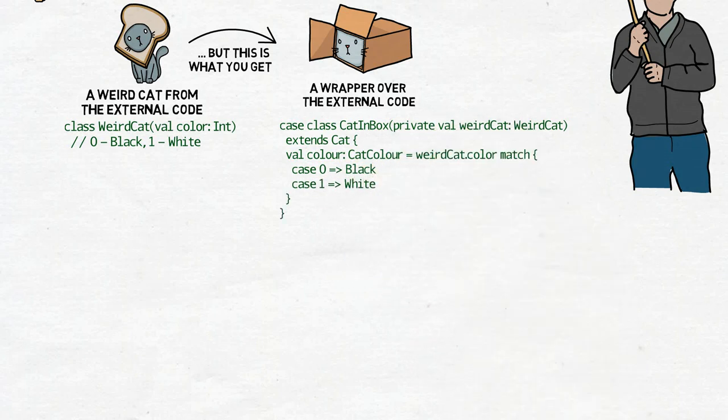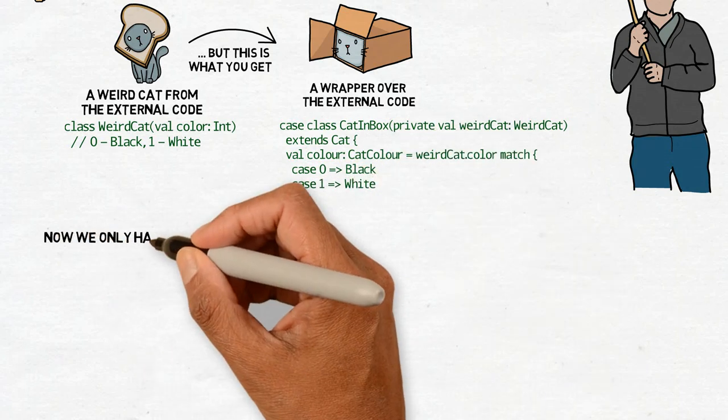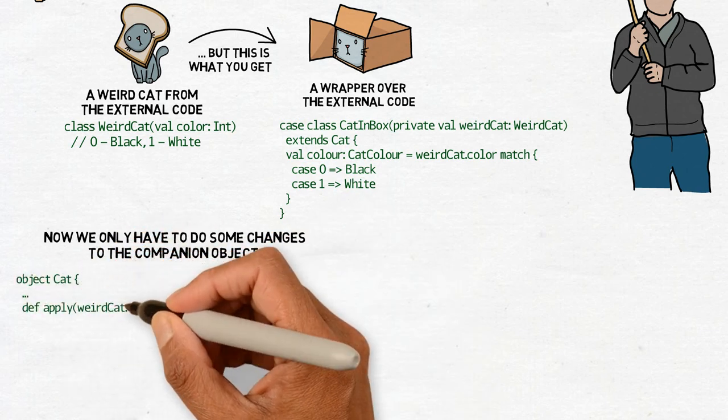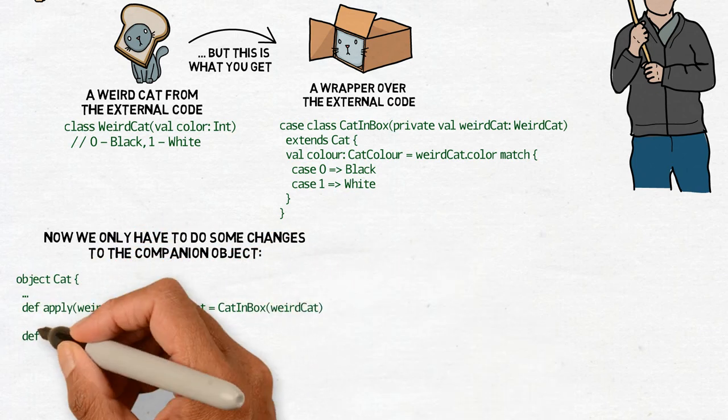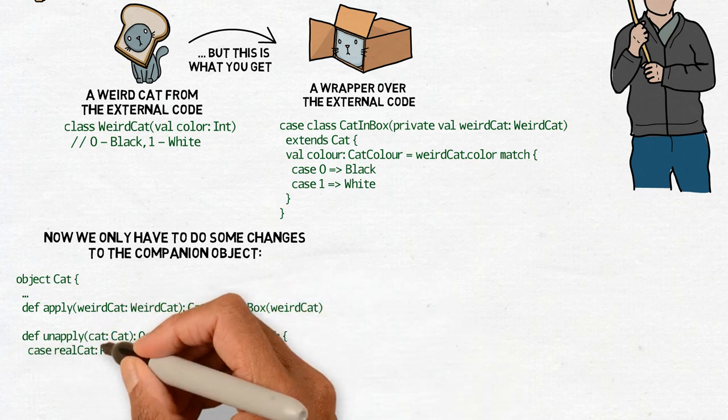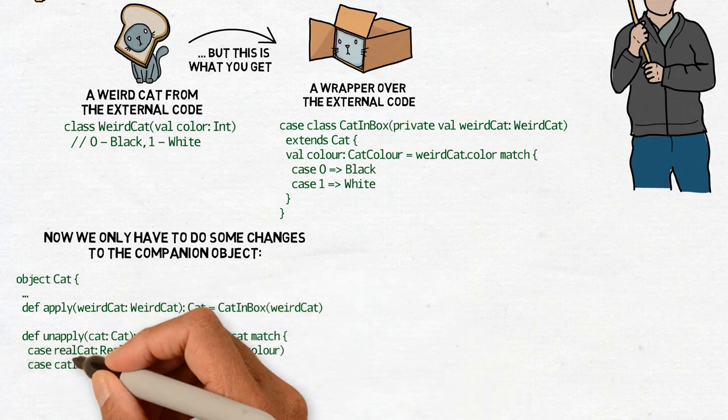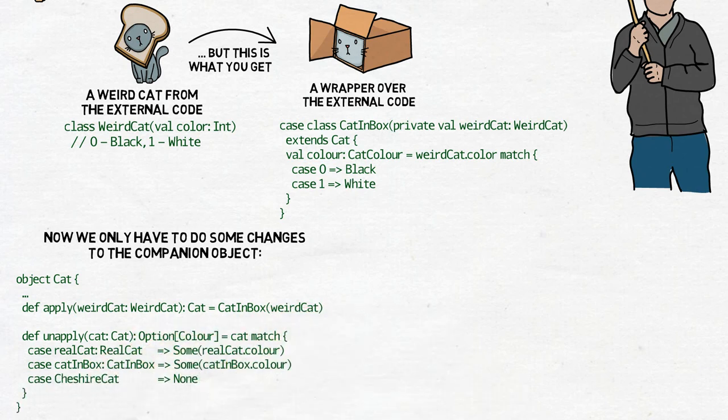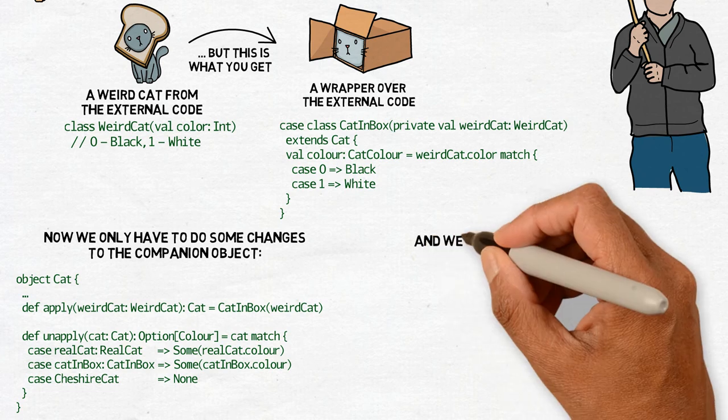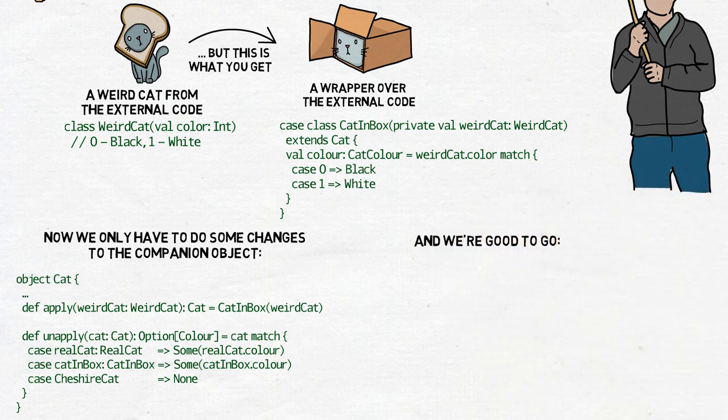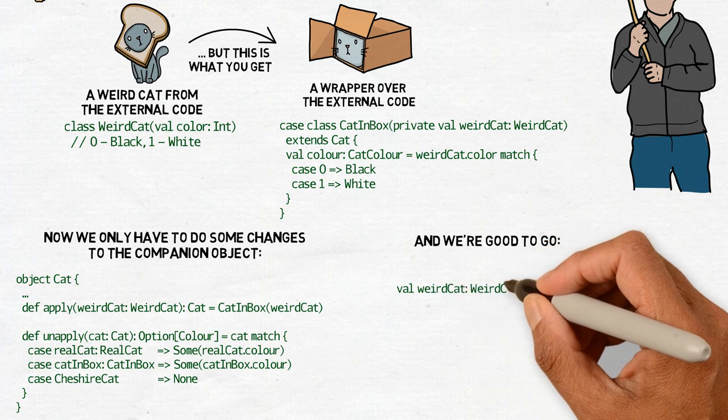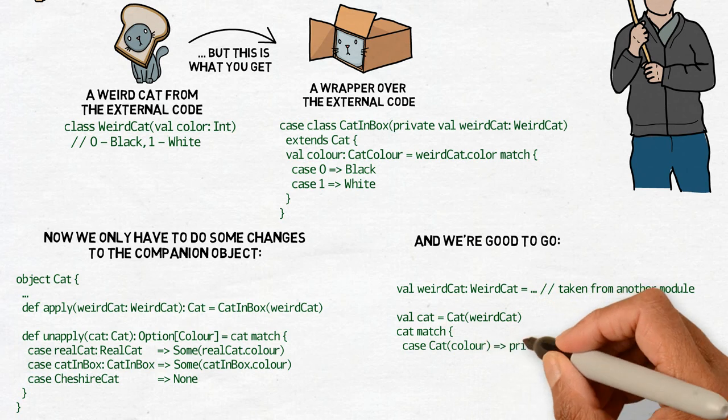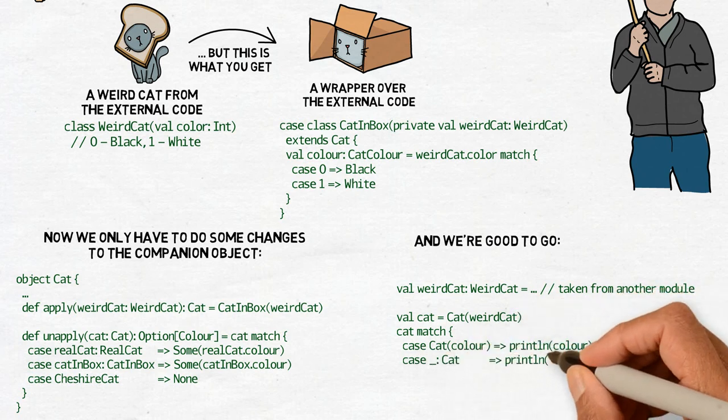Here's where the NewType pattern can be of use. This is the wrapper CatInBox that takes the WeirdCat, and it extends the Cat trait, and it gives us the value Color. Then we define the apply method for the WeirdCat and an unapply method which will give us an option of Color. And as you can see, if we get a CatInBox, it will give us the Color. And then we're good to go. We can take the WeirdCat from that another module, and we can wrap it and use it in match cases, just as if it were a regular Cat.